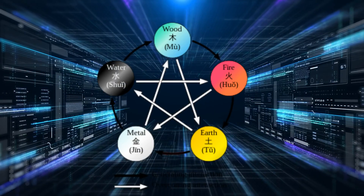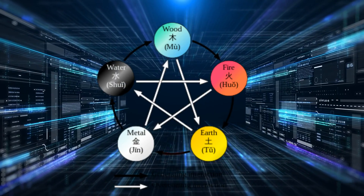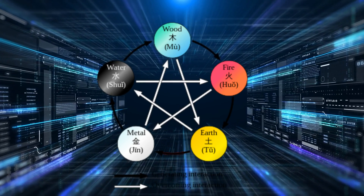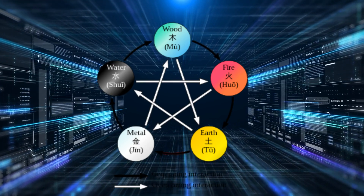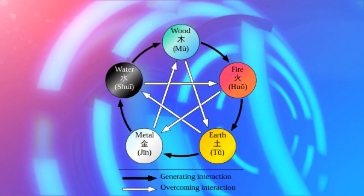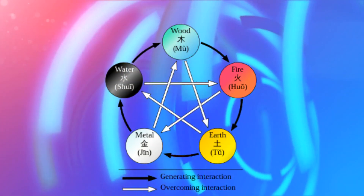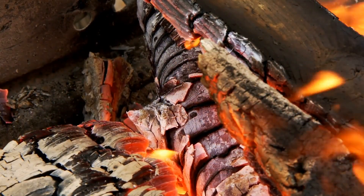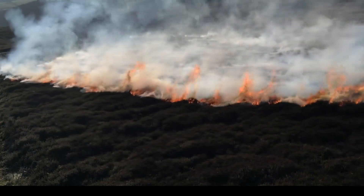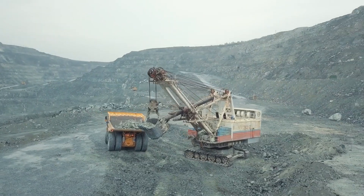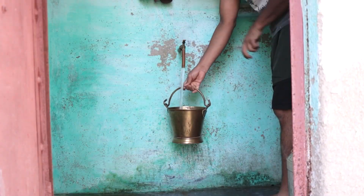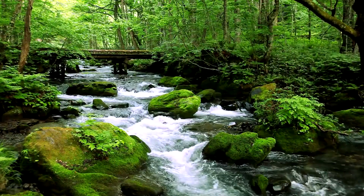Let's examine these elemental interactions. The five elements interact in two main ways: creating and destroying. First, there is the creating cycle. Wood feeds fire. Fire creates earth, or ash. Earth bears metal. Metal holds water in the form of vessels. Water nourishes wood.